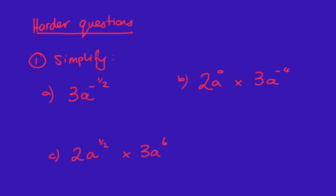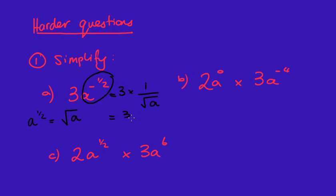Now for three more slightly more challenging questions — pause it, have a crack, and see if you can get them right. Welcome back. For the first one, the negative a half is only working on the a, not the 3. The negative index means 1 over, and a to the power of a half is the square root of a. So the final answer is 3 over the square root of a.